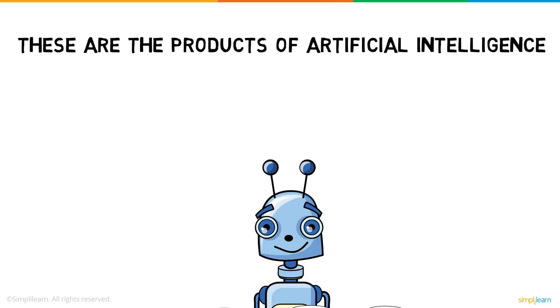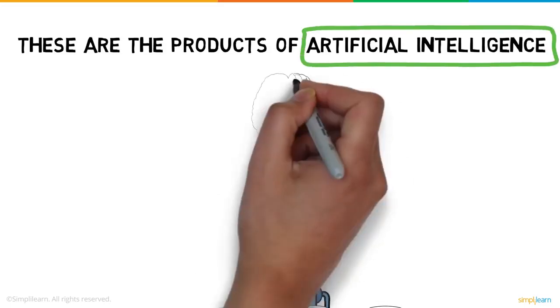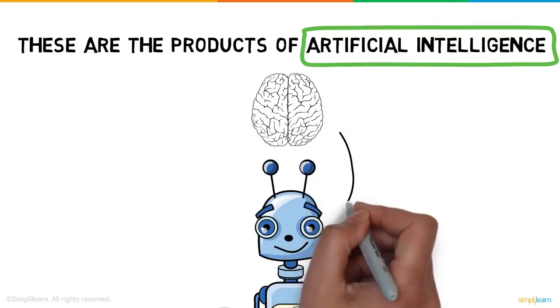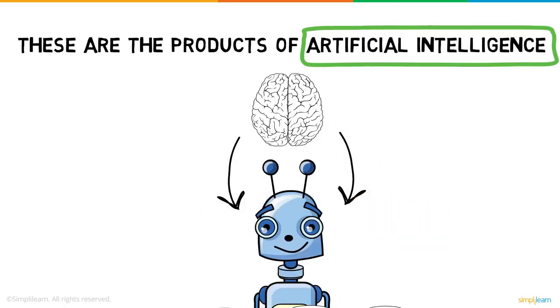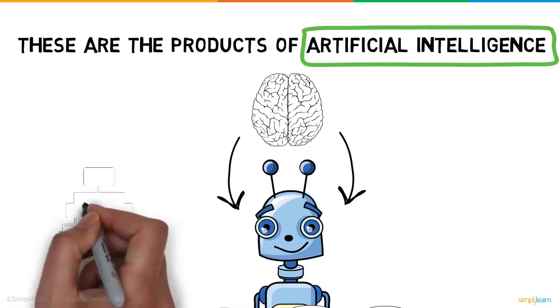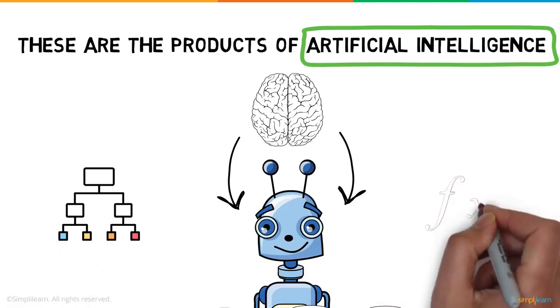But why use the term artificial intelligence? Well, these machines are artificially incorporated with human-like intelligence to perform tasks as we do. This intelligence is built using complex algorithms and mathematical functions.